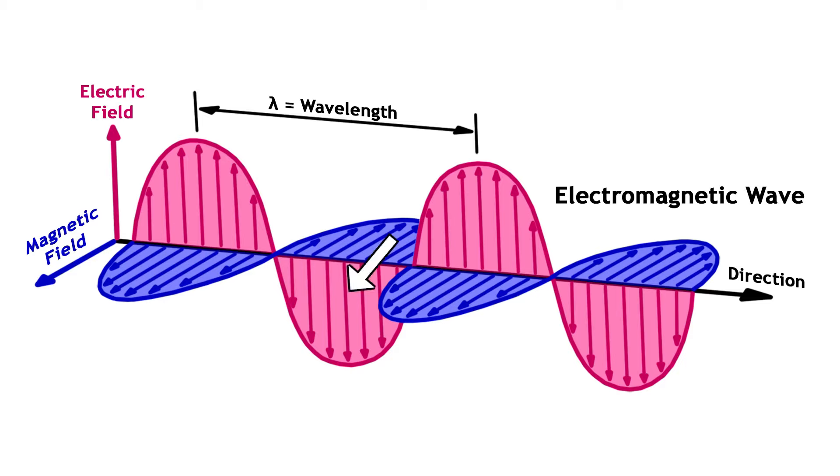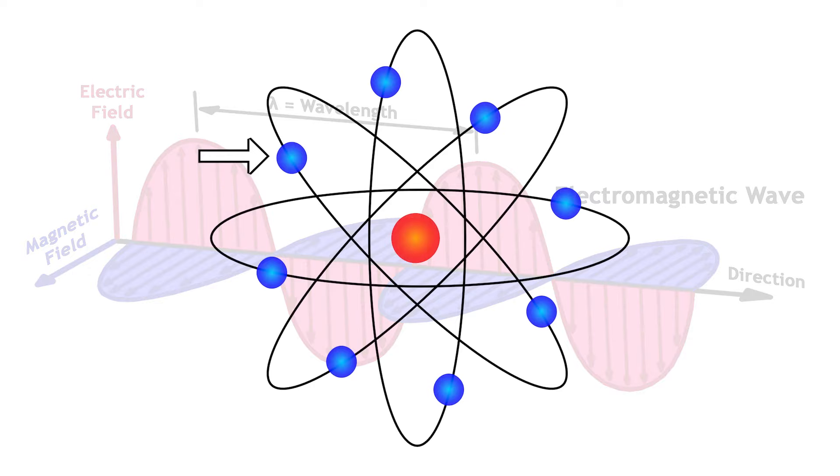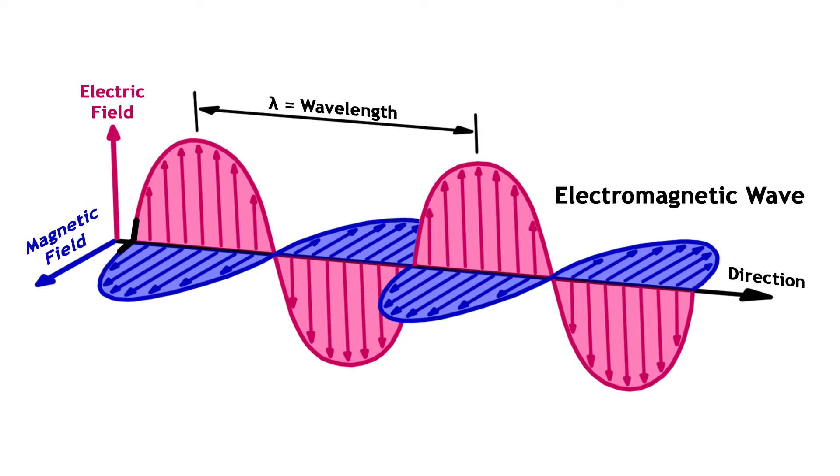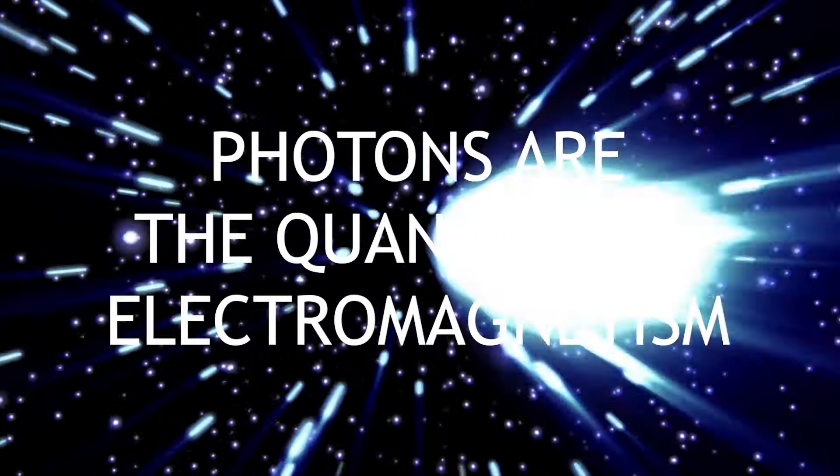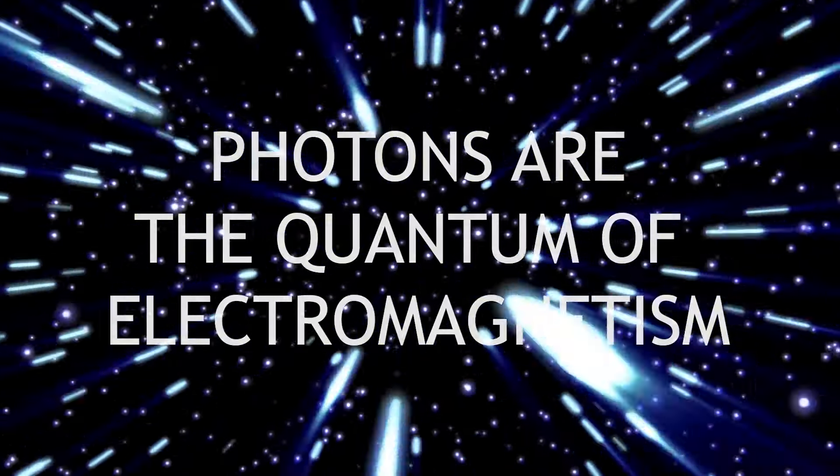Electromagnetic waves are combined electric and magnetic fields of potential energy that interact with charged particles like electrons. These two fields pulse 90 degrees to each other and photons are the carriers of electromagnetic energy behaving in a wave-like manner.